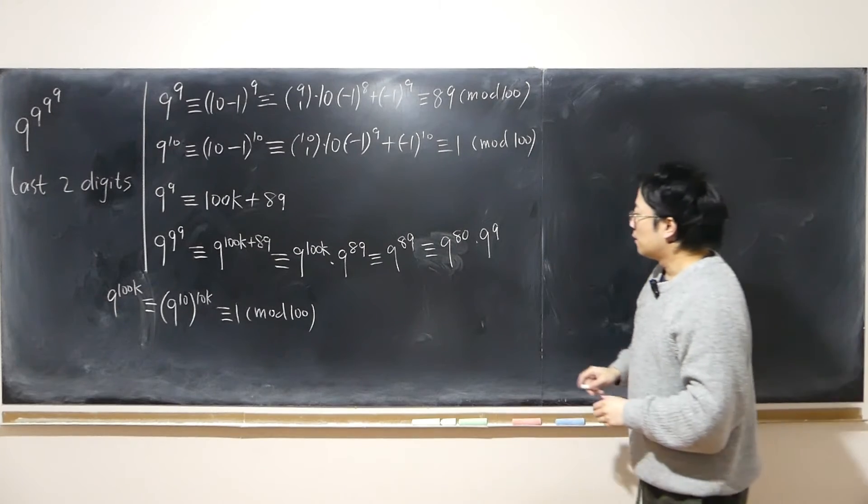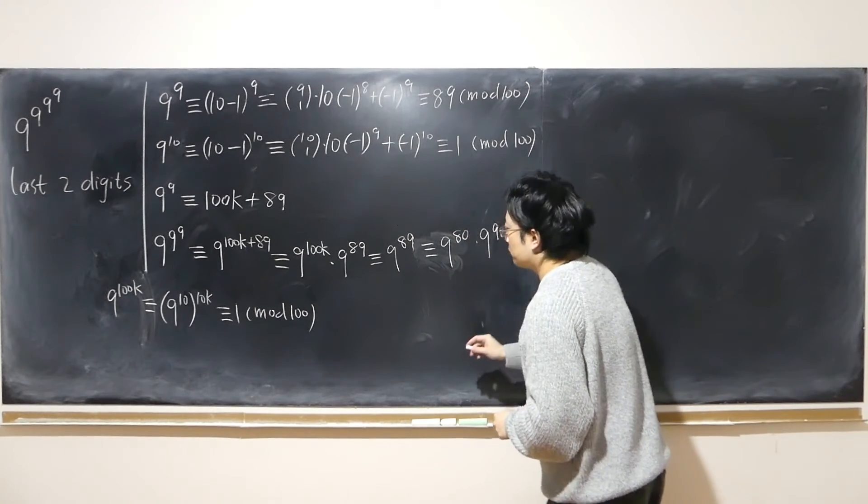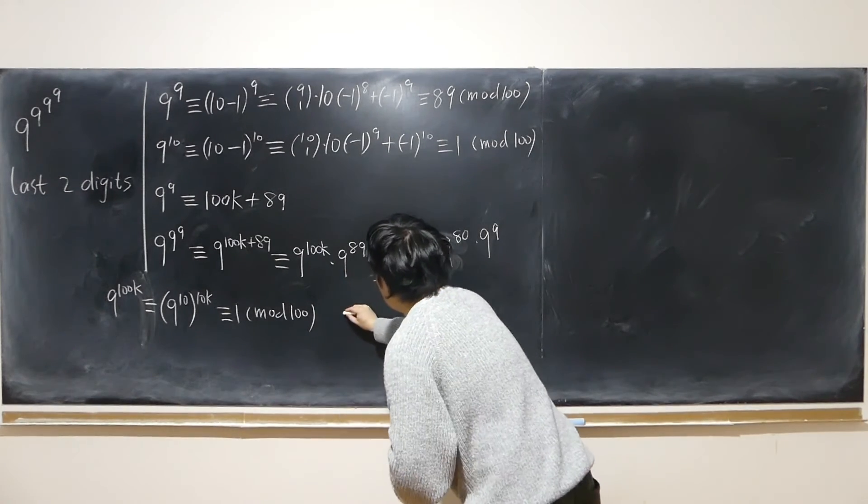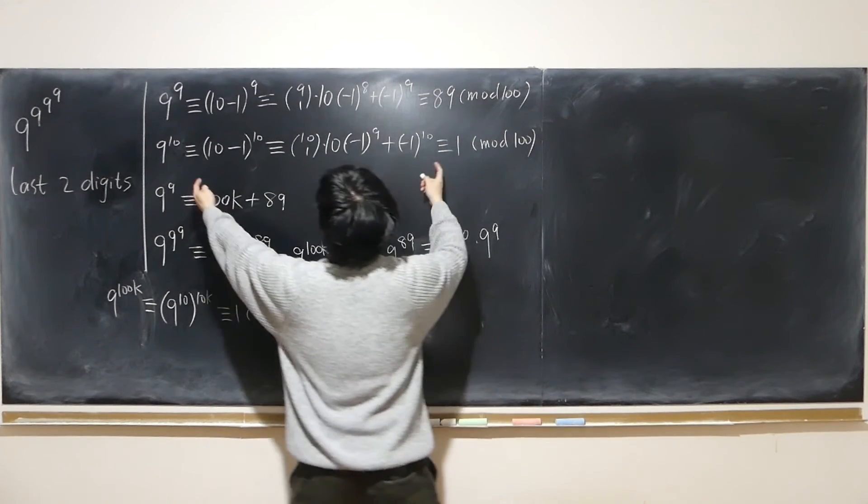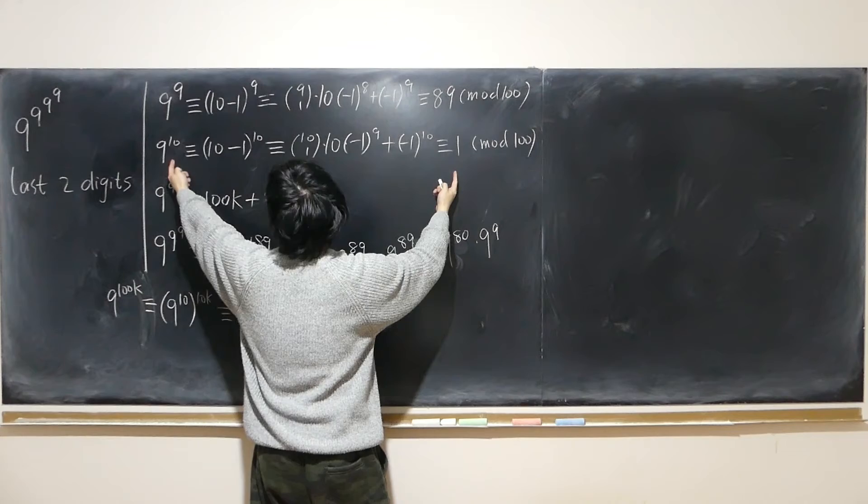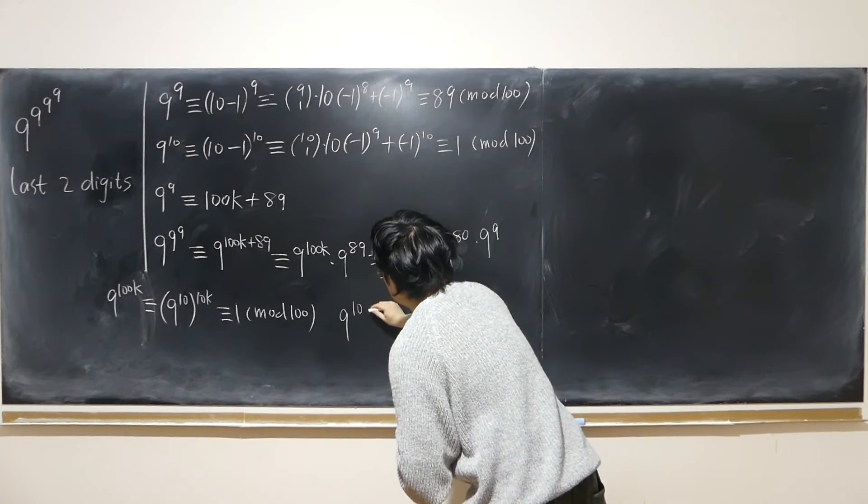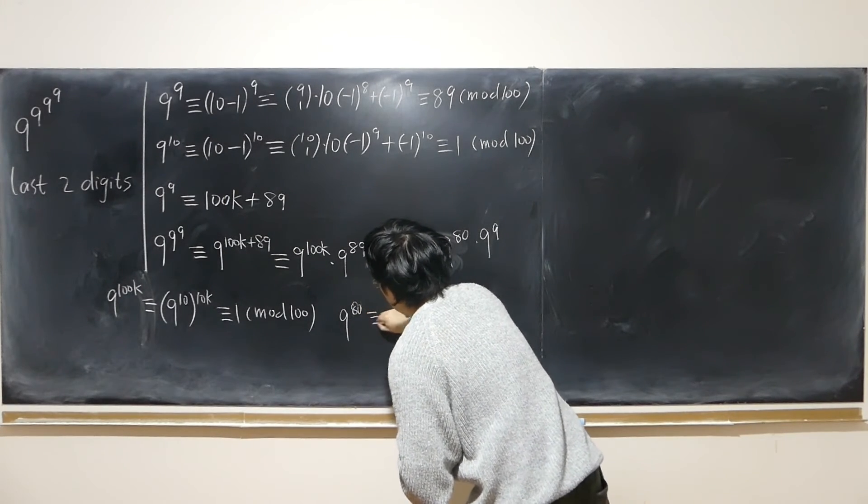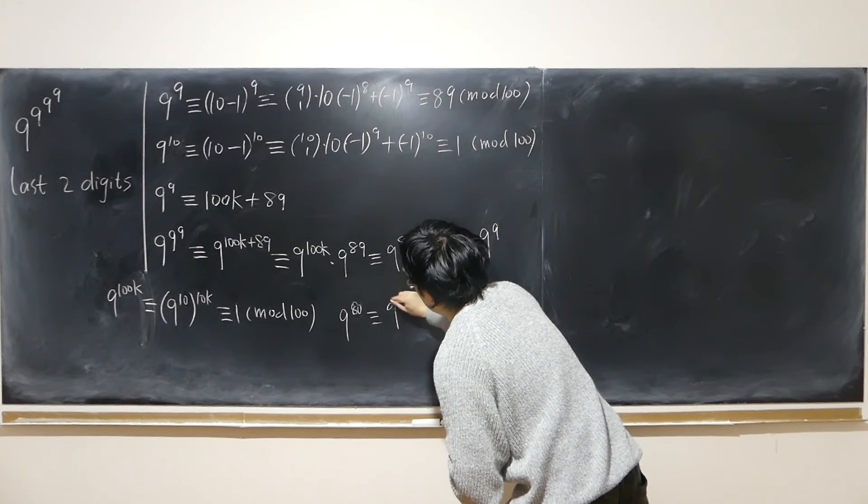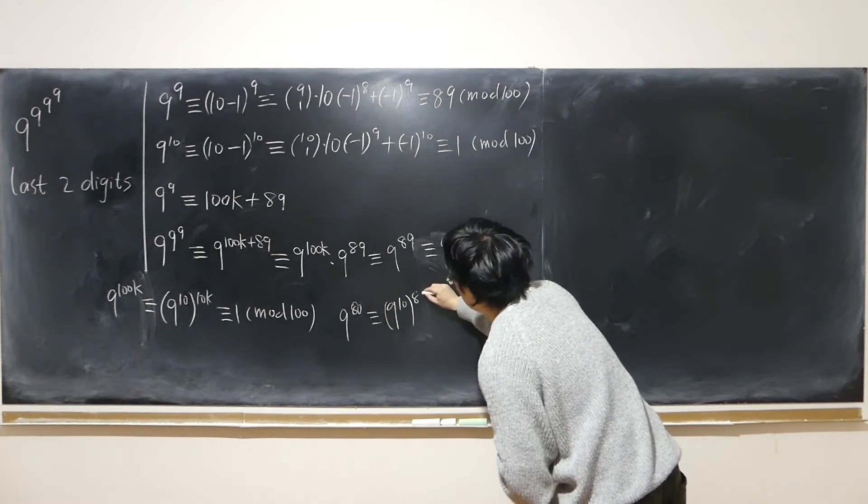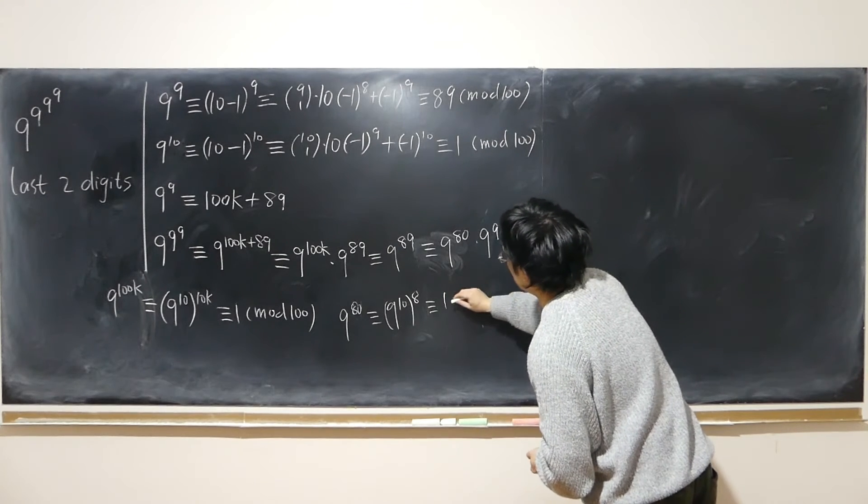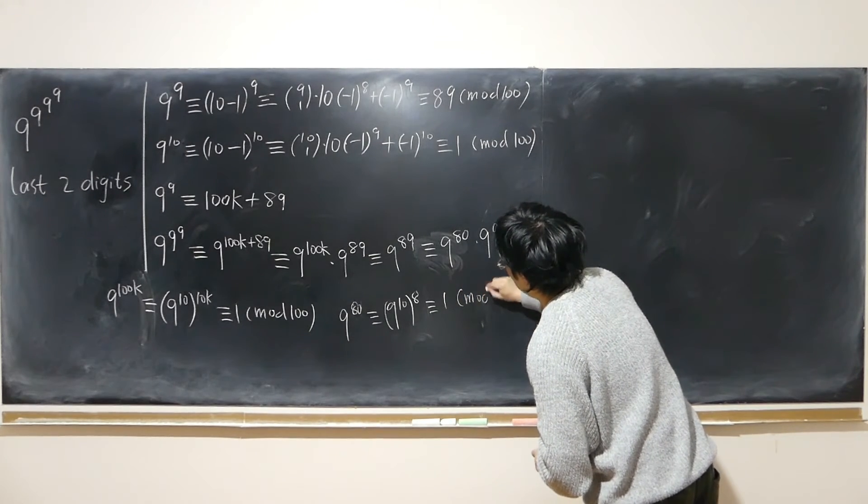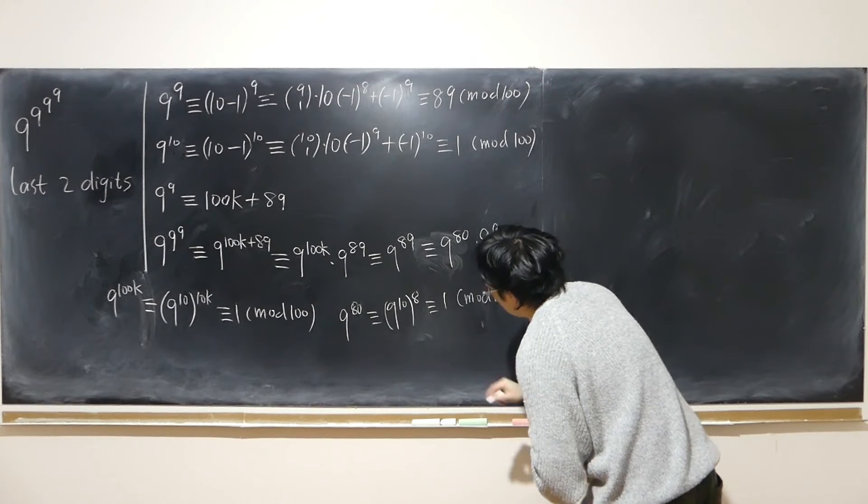But before we put mod, let's see. This can be written into 9^(80+9), so 9^80 times 9^9, right, power rule. So this number is what I say, this number, because 9^10. Raised to power of 8 on both sides, right, 9^10 to the power of 8 still congruent to 1 to the power of 8, still 1, mod 100.